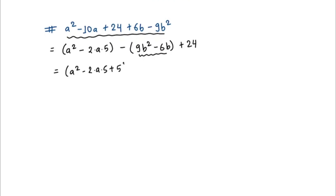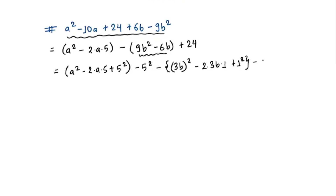Now completing the square: for the first bracket, a squared minus 2·a·5, I add plus 5 squared inside and put minus 5 squared directly outside the bracket. For the second bracket, 9b squared is (3b) squared, and minus 2·3b·1 accounts for the 6b term, so I need plus 1 squared inside. Since there is a minus sign before this bracket, bringing minus 1 squared out gives plus 1 squared outside. Then we have our plus 24.